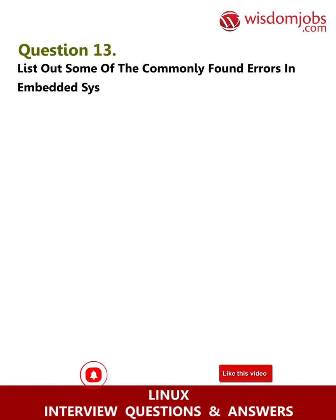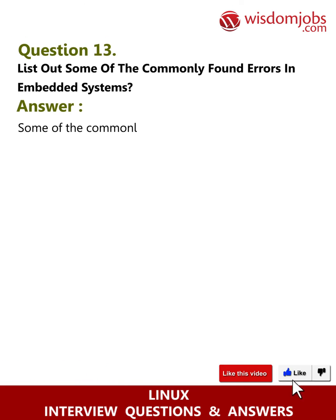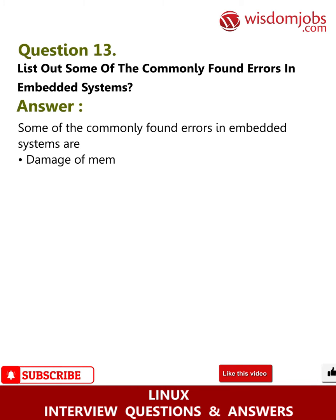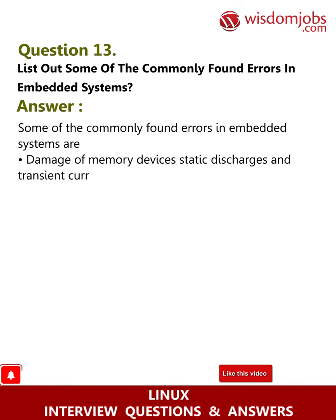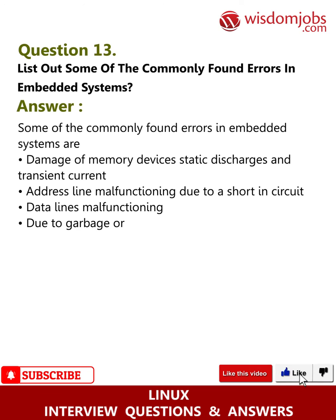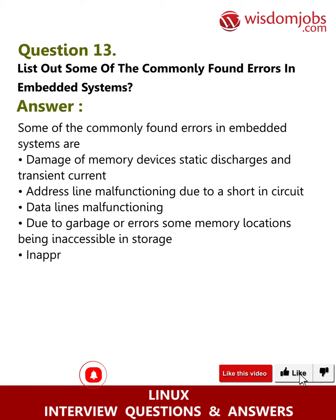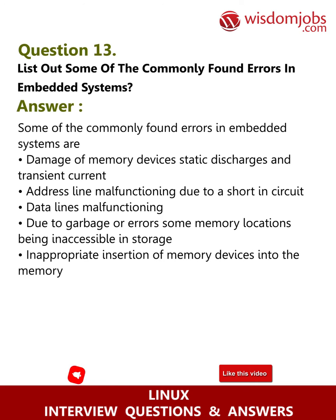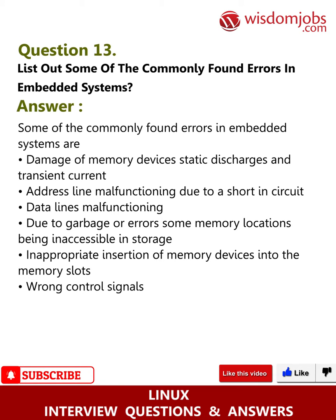Question 13: List out some of the commonly found errors in embedded systems. Answer: Some of the commonly found errors in embedded systems are damage of memory devices, static discharges and transient current, address line malfunctioning due to a short circuit, data lines malfunctioning due to garbage or errors, some memory locations being inaccessible in storage, inappropriate insertion of memory devices into memory slots, and wrong control signals.